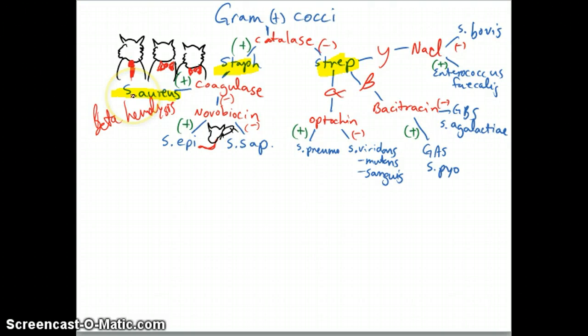So staph aureus is the rock star over here. It's coagulase positive as well, which means it can coagulate your blood, clump it together. Obviously, that would cause some big problems in our vessels. So staph of cats, coagulase positive means it's a rock star. It's got beta-hemolysis.